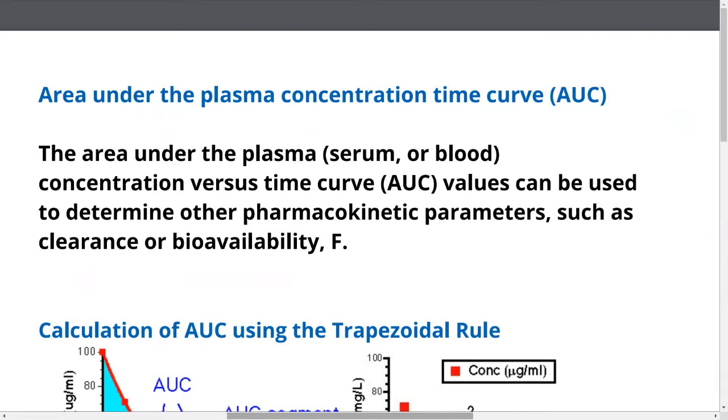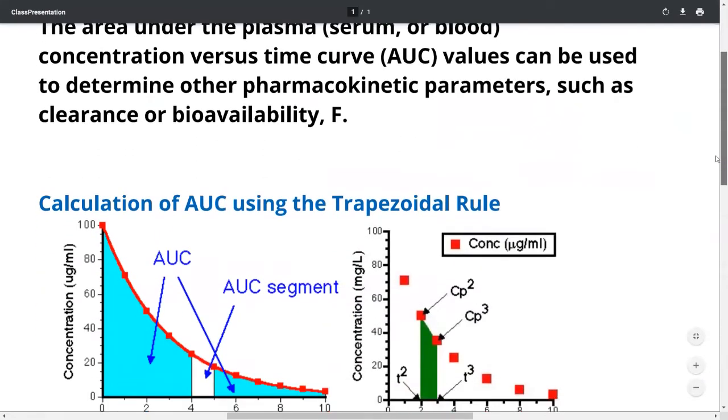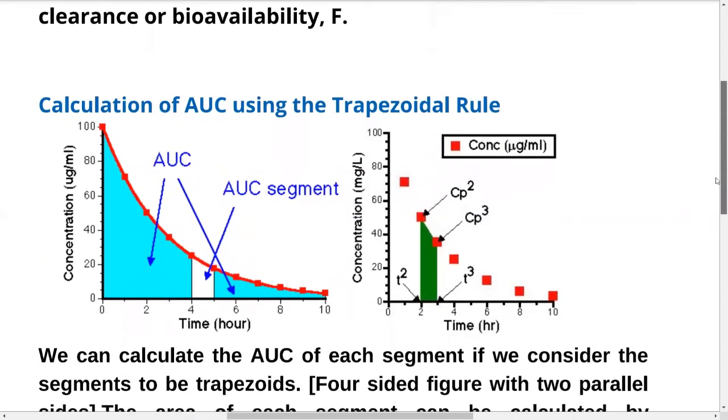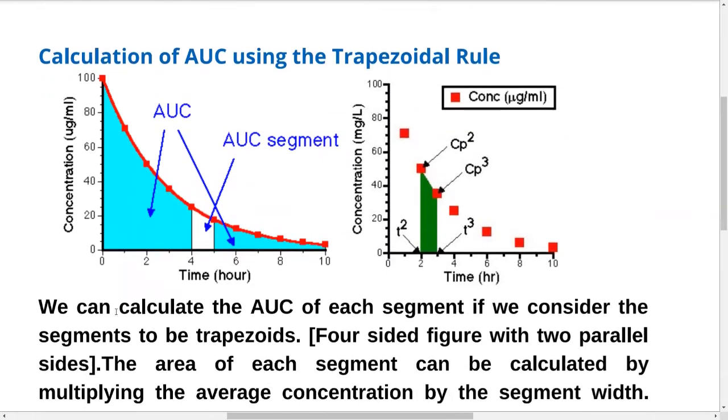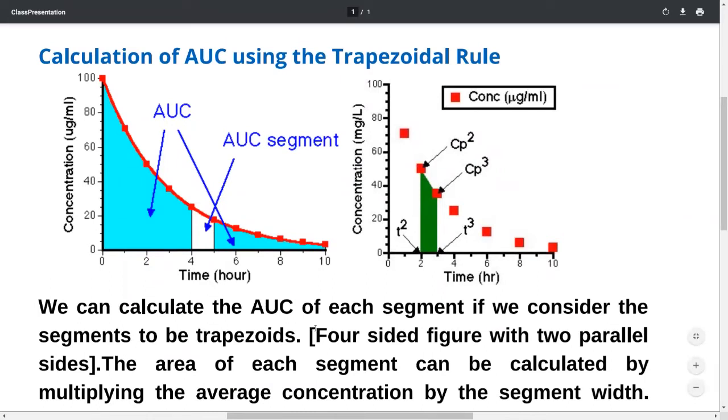Let's look at calculating AUC using the trapezoidal rule. The area under curve has been divided into different segments. This particular segment is called a trapezoid. We can calculate the AUC of each segment if we consider the segments to be trapezoids, a four-sided figure with two parallel sides.